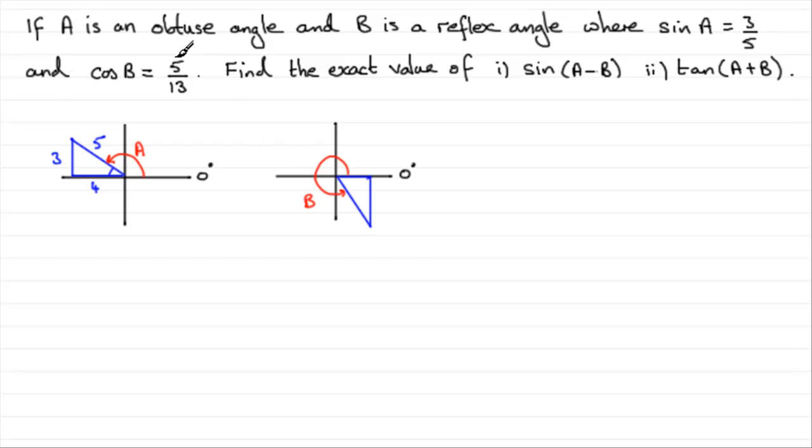And this will be angle B. Starting from here, going round anti-clockwise and I'd mark that in. If it said that cosine B was minus 5 thirteenths, then cosine for a reflex angle is negative in the third quadrant, here. So, I would have drawn this triangle out in this quadrant. Anyway, cos B is positive, so we've ended up in this quadrant.